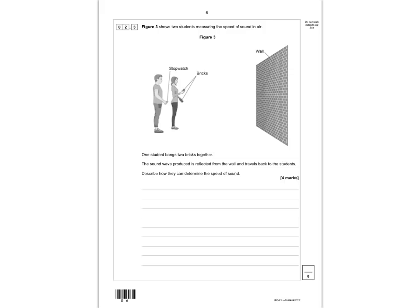The next question says figure 3 shows two students measuring the speed of sound in air. One student bangs two bricks together; the sound wave reflects from the wall and travels back. To describe how they determine the speed of sound, you need the equation: speed equals distance over time. You measure the distance to the wall with a ruler, then double it because the sound reflects back. Use a stopwatch to time from when the bricks bang until you hear the echo return.